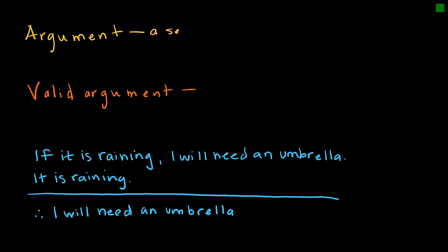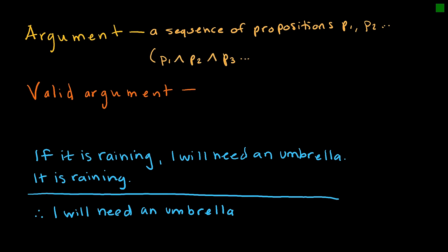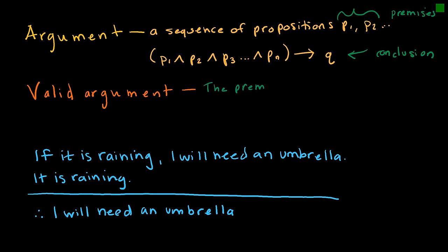An argument is just a sequence of propositions — P1, P2, etc. — such that if P1 and P2 and P3, all the way up to Pn, implies Q. We call P1, P2, etc., the premises, and we call Q the conclusion. A valid argument means that the premises imply the conclusion.